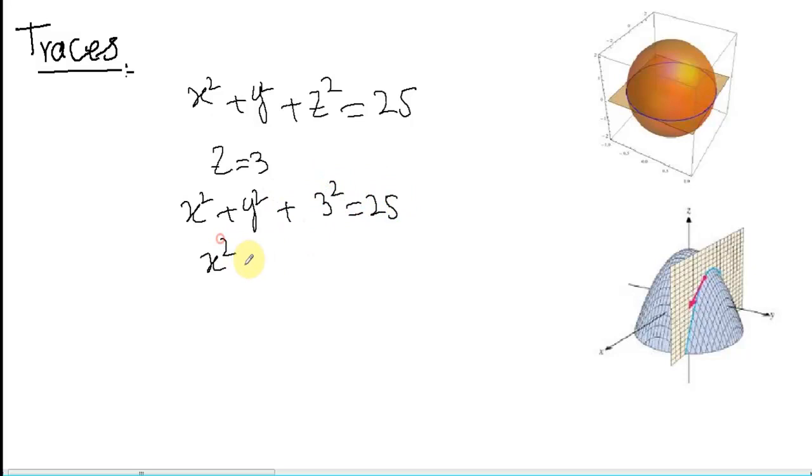That is X square plus Y square plus 9 equal to 25. We will further solve the problem: X square plus Y square equal to 25 minus 9, that is X square plus Y square equal to 16, which is an equation of a circle.